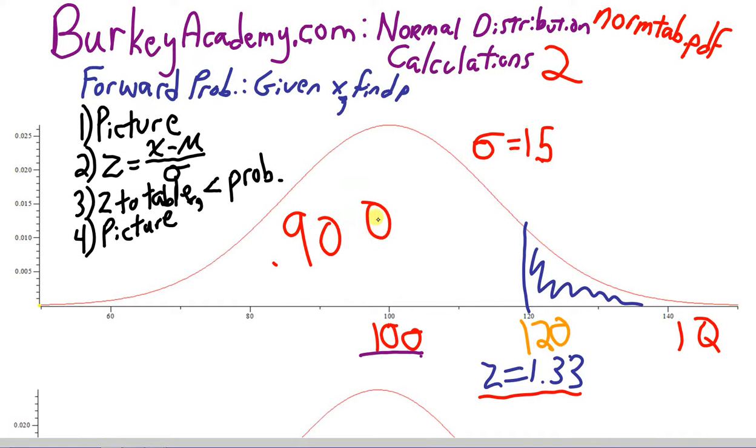So .9082 is all this probability of being less than 120, we subtract 1 minus that and we get .0918. 9.18% of people have an IQ greater than 120. That was the last video.